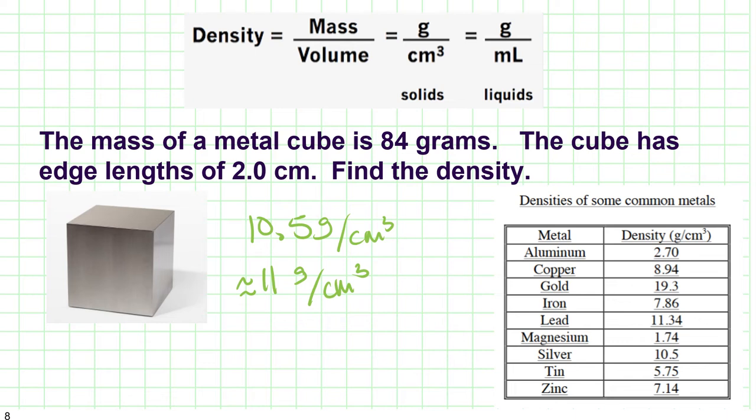I can actually determine the identity of this metal by looking at the known densities of some common metals. And so I'm going to scan and I see, hey, 10.5 grams per cubic centimeter is silver.